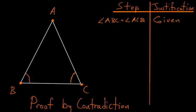We know that we want to prove that AB and AC are equal, but let's assume that they aren't equal. Let's assume that one has to be bigger than the other. So let's say that AB is the bigger side, so that it's bigger than AC.